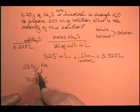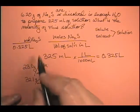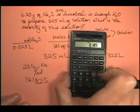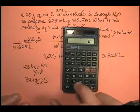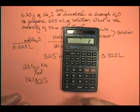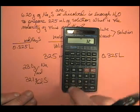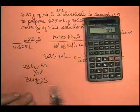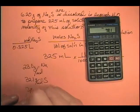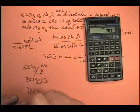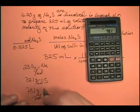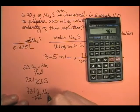Well, let's figure out the molar mass of Na2S. There's 2 sodium, so 23 times 2, plus the sulfide, which is 32.1, equals 78.1 grams per mole for sodium sulfide.